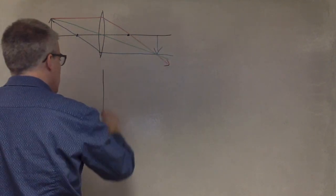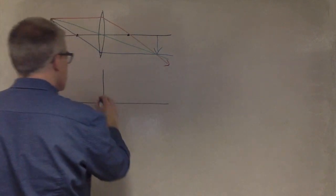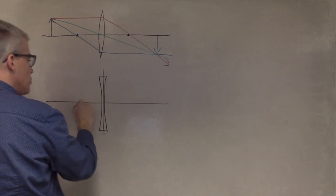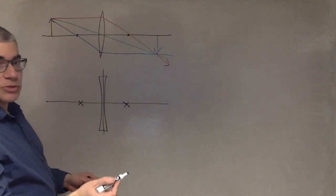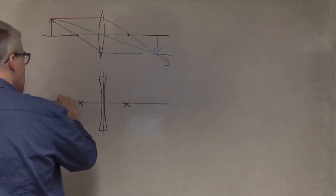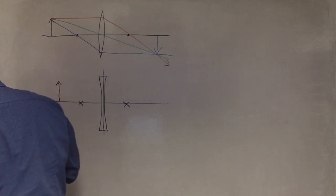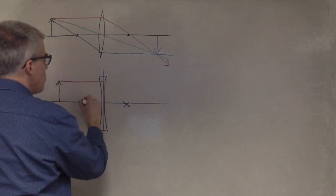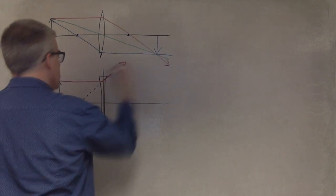All right, what about a diverging lens? We have two focal points, I used X's for those so I don't get them confused. If I have an object here, the parallel beam bends away from this focal point.